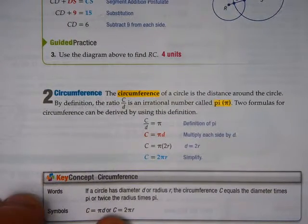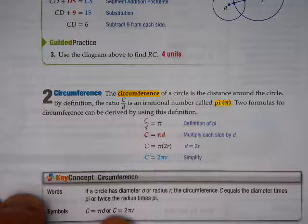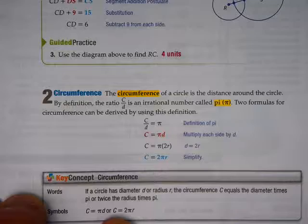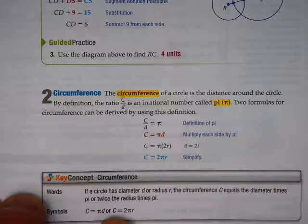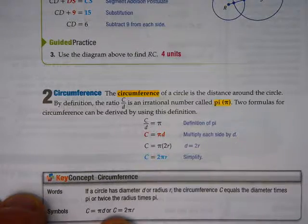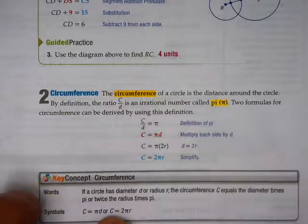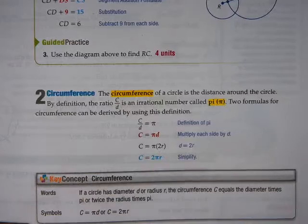I remember once my brother and I, we got in an argument about that. He's like, it's pi times diameter. I'm like, no, it's 2 pi r. You're wrong. He goes, no, it's pi times diameter, I'm pretty sure. I'm like, no, no, no, I'm certain. It's 2 pi r. Well, we were both right.